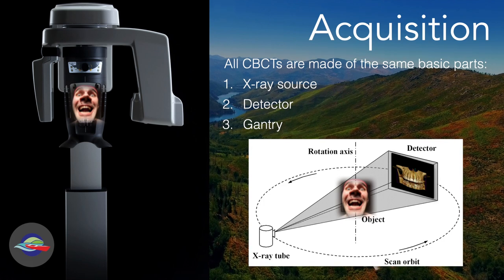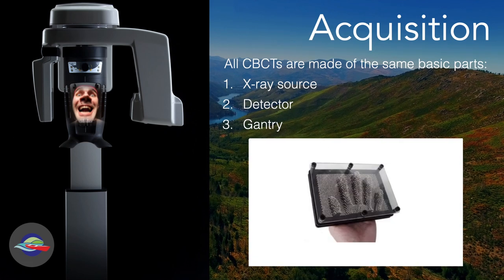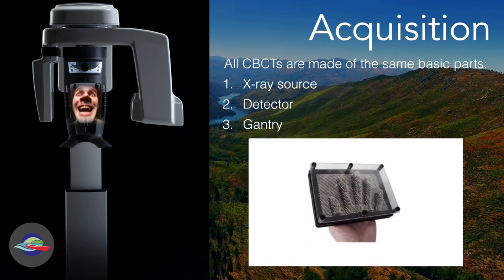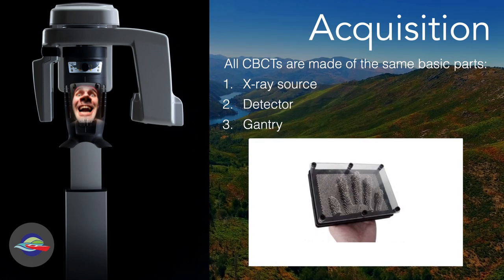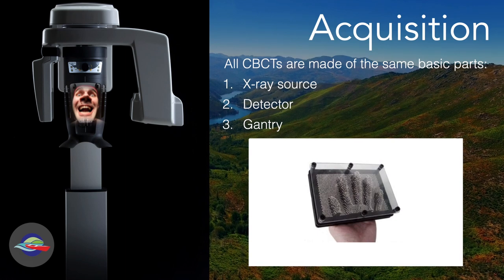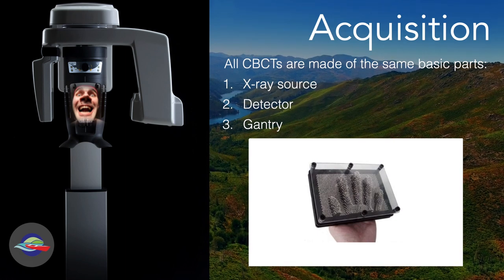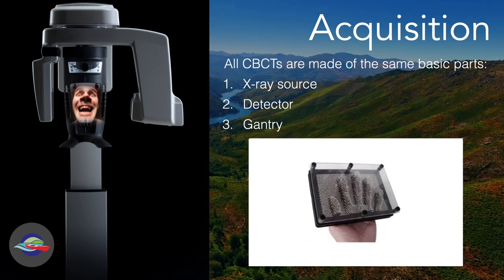Think of it kind of like those weird needle toys — when you push your hand on it, it makes an impression. X-rays are pushed out in a burst to the detector, but only those that make it through the object make an impression on the detector in the shape of the object that they passed through. So the more dense the object is, the fewer the x-rays that can pass through it, and the less dense, the more x-rays can get through. So the image that's created is really just a gradient of densities.